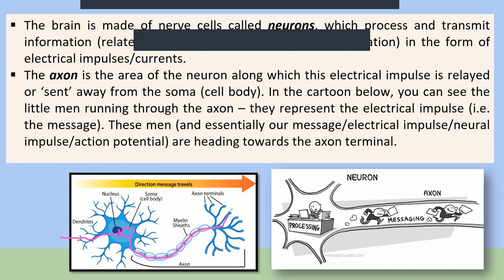Once processed, the message then travels through the axon towards the axon terminals. When the axon terminal senses that a message has arrived, the vesicles — pouches within the terminal buttons — press down and release neurotransmitter into the synaptic gap. The neurotransmitter acts as a carrier for information, facilitating the sending of the message. The message binds to the neurotransmitter, which allows it to travel quickly to the next neuron in that chain. The myelin sheath surrounding the axon ensures the message travels swiftly and smoothly with no outside interference.